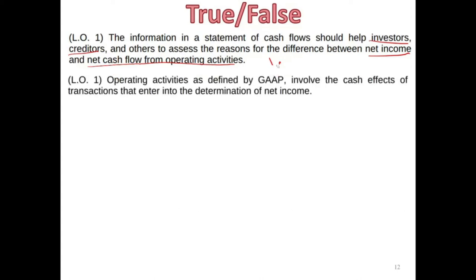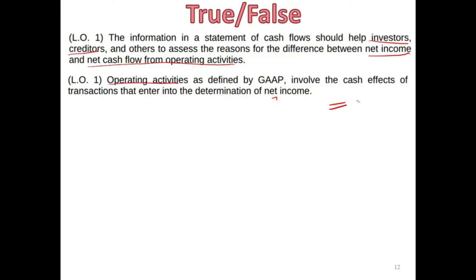Statement two: Operating activities, as defined by GAAP, involve the cash effect of transactions that entered into the determination of net income. Yes, operating activities takes net income and converts it into operating cash flow, which is under the operating activities of the cash flow statement. This statement is also true.